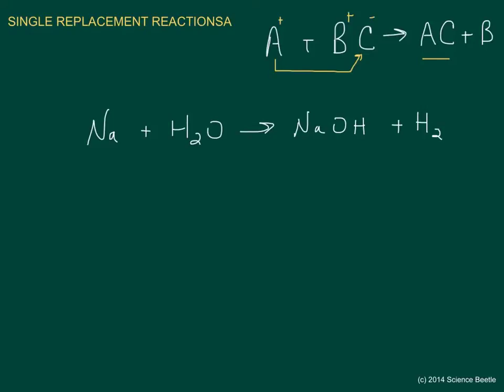We'll divide out the sheet — left side and right side — and begin with the first atom on the left: sodium. We've got one sodium on the left and one sodium on the right, so those are equal. Moving on to hydrogens: we've got two hydrogens in the water molecule. On the right hand side, we've got one hydrogen in the sodium hydroxide and two hydrogens in the hydrogen gas, giving us a total of three on the right. Whenever we're balancing equations, we don't want odd numbers, so we want to add another molecule of sodium hydroxide.